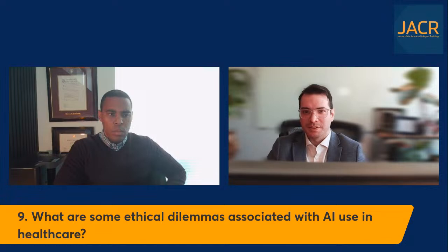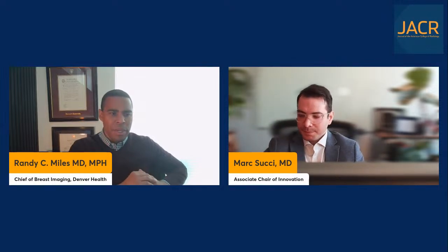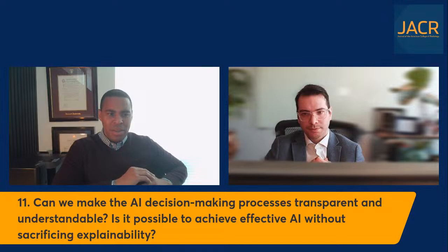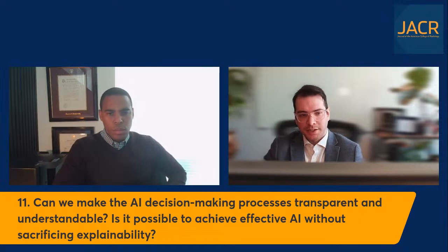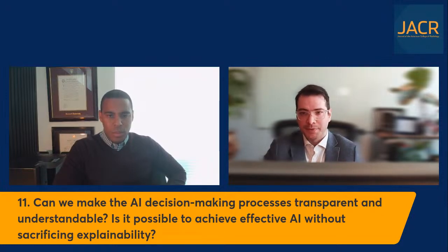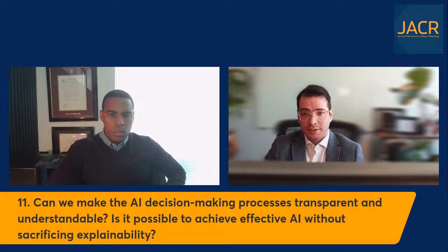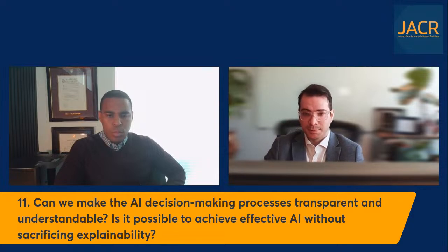Can we make the AI decision-making process more transparent and understandable? Is it possible to achieve effective AI without sacrificing explainability? Researchers like Synho Do have done a lot of work on explainable AI. I think it's definitely possible to achieve effective AI that is also explainable. In fact, it's not only possible but necessary — to engender large-scale adoption, AI has to make decisions that can be explained and understood by the folks receiving those decisions.